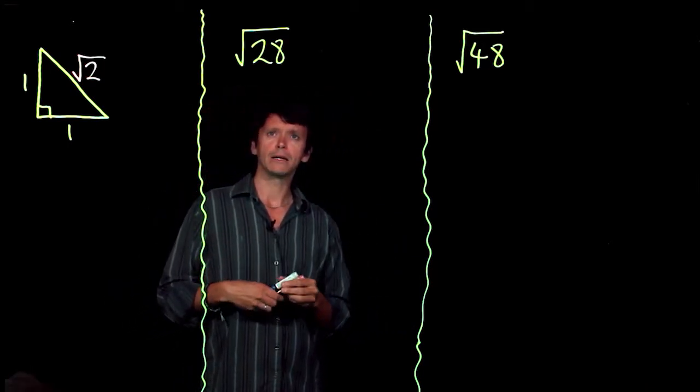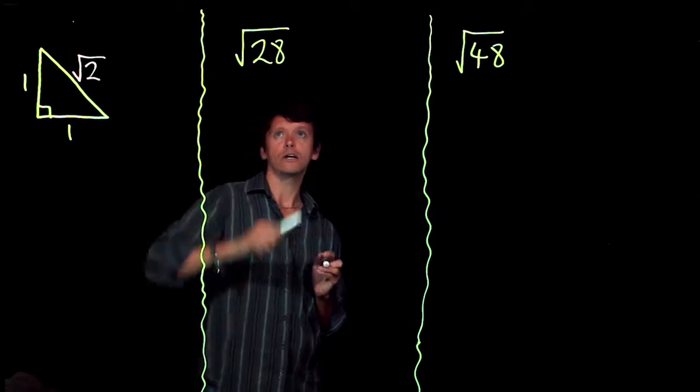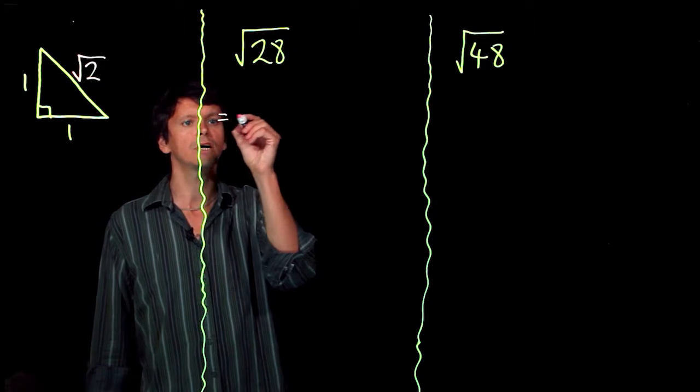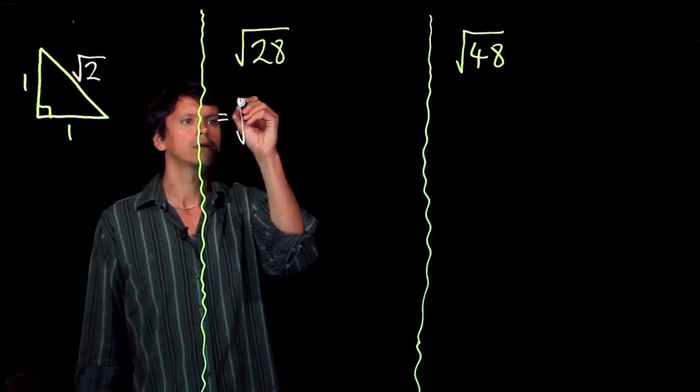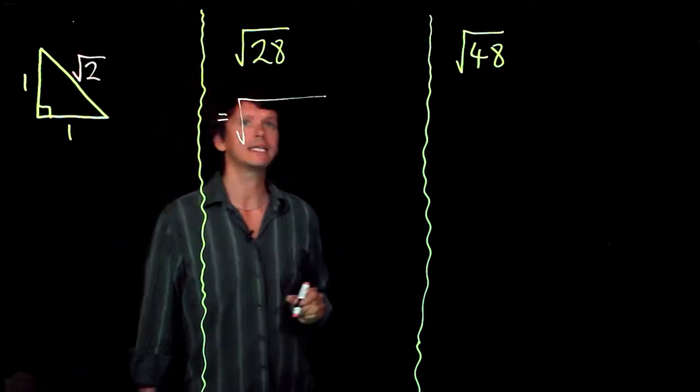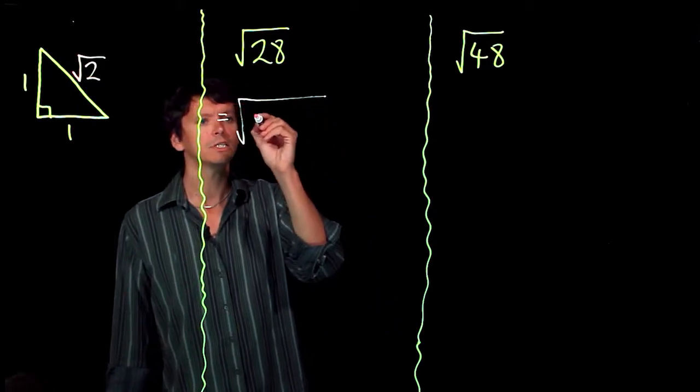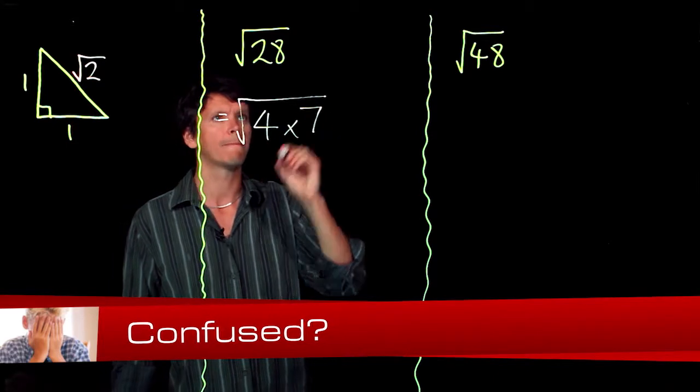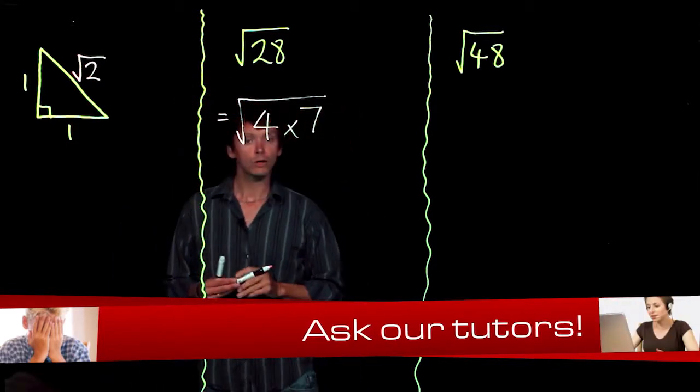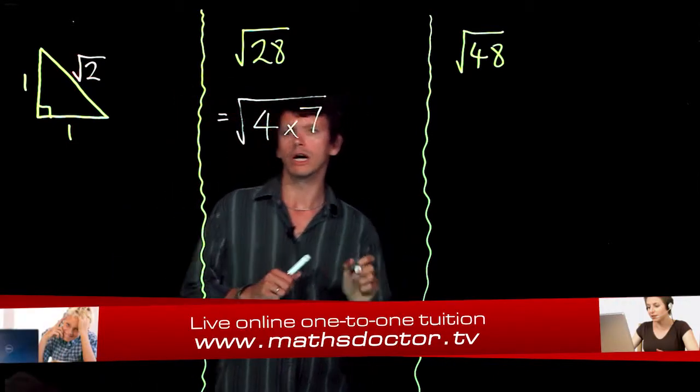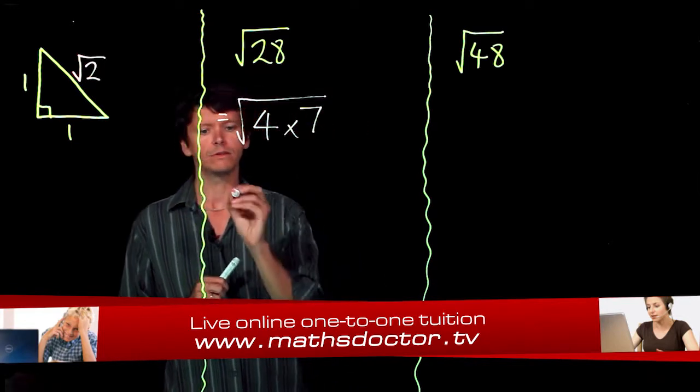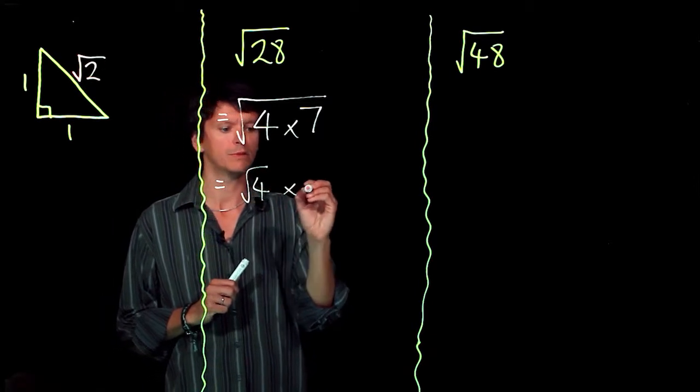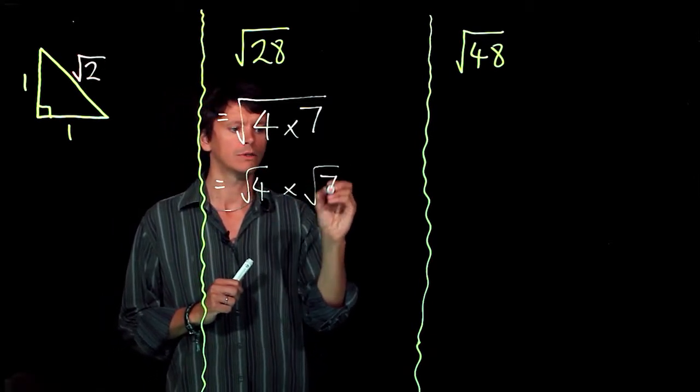And we do that by finding the factors of 28 and splitting 28 up into those factors. So we know that 28 equals 4 times 7. So within this square root I'm going to write 4 times 7. From our rules of indices we also know that the square root of 4 times 7 equals the square root of 4 times by the square root of 7.